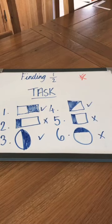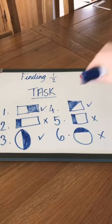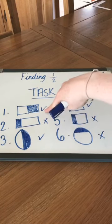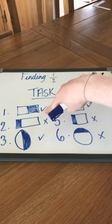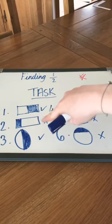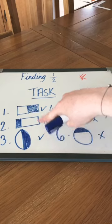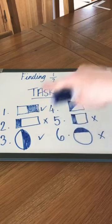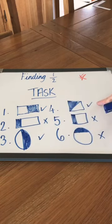You can see that that is an equal half, not an equal half, equal halves, equal halves, not, and not.